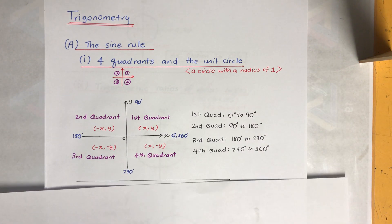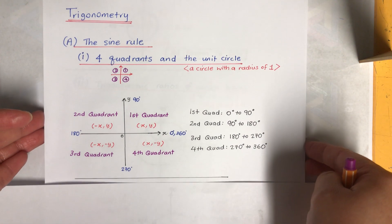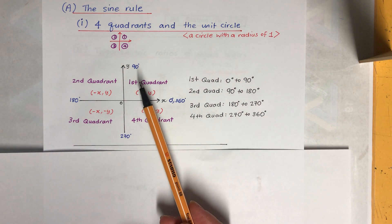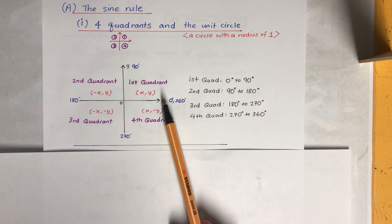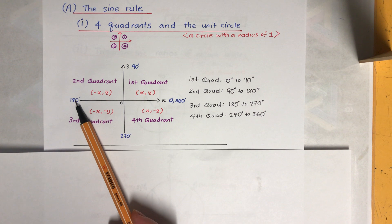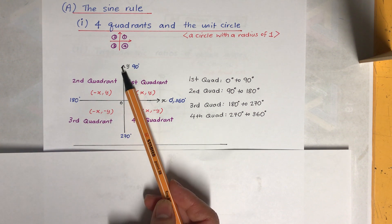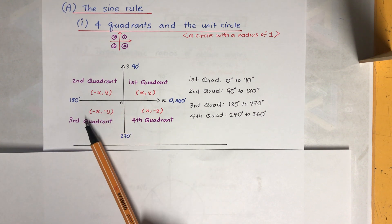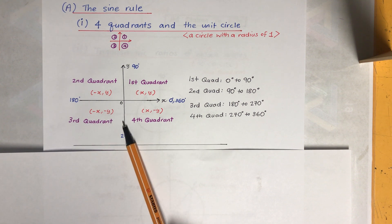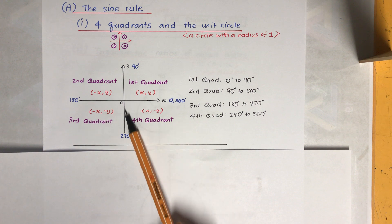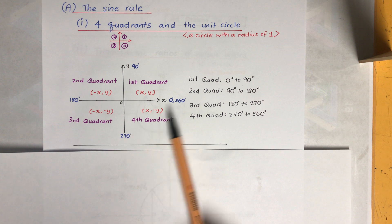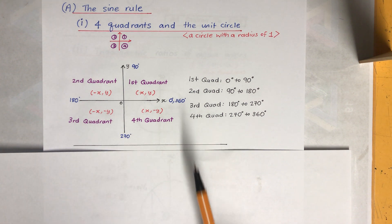The first quadrant is where all the x-values and y-values are positive. The second quadrant is where the x-value is negative but the y-value is positive. The third quadrant is where both the x-value and y-value are negative. The fourth quadrant is where the x-value is positive and the y-value is negative.